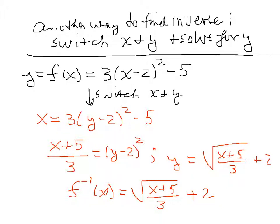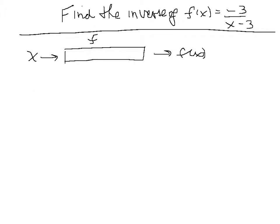Let's finish up with another example — finding the inverse of a rational function. First, let's think about how f is created using the machine analogy. The first thing that happens is we subtract 3 from x. Then we put it in the bottom, which means we raise it to the minus one power. Then we multiply by minus 3. That's how f is created.